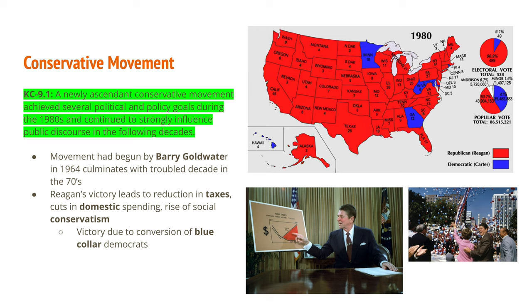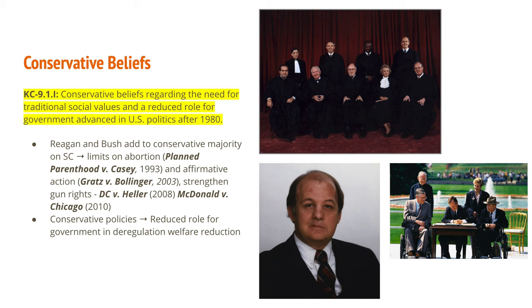Reagan took more conservative stances on social issues like gay marriage and abortion. His election could not have happened without the conversion of blue-collar Democrats who had once been a key part of the New Deal coalition — a collection of Democratic voters going back to the presidency of FDR. These conservative beliefs regarding traditional social values and a reduced role for government advanced in U.S. politics after 1980.